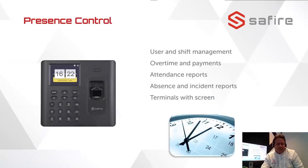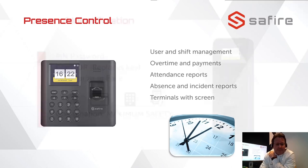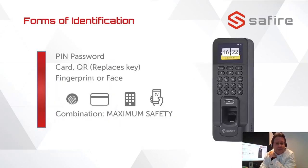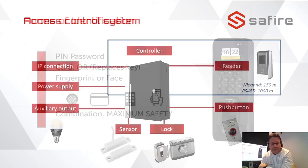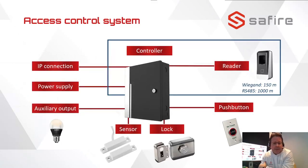Here we have the time attendance devices. We have the black color and the gray color in various forms — with a fingerprint reader or with a card reader. Here is one that also has the option of a pin code and card reader. There are also other ways of registering your access, such as with face recognition, though not with this model. Here we have the controller that you can connect readers and push buttons to exit, obviously the lock, and a sensor to know if the door is closed or open.